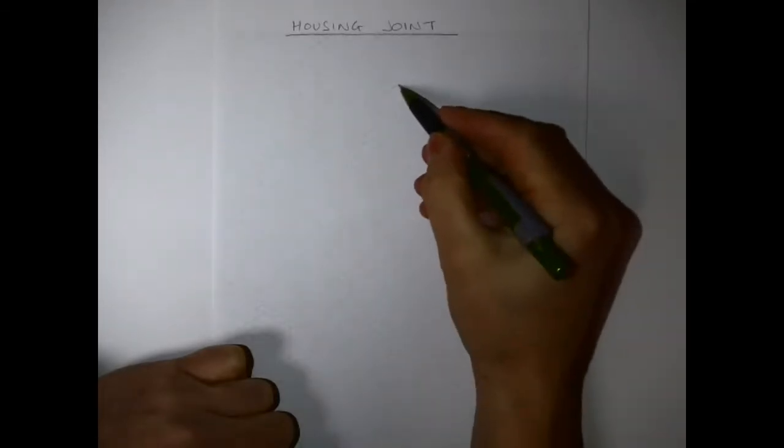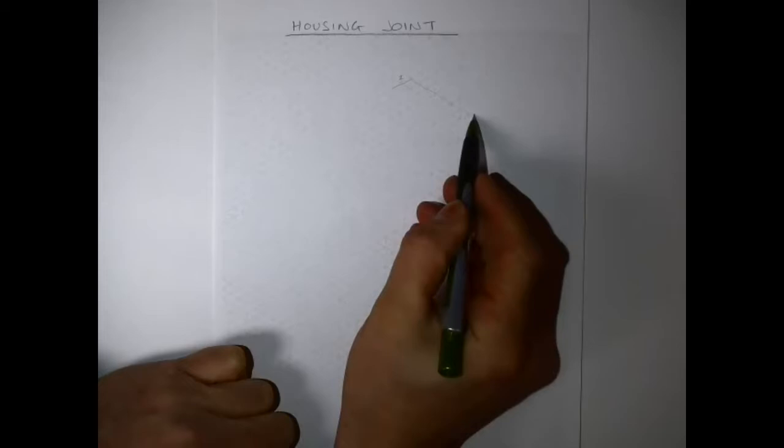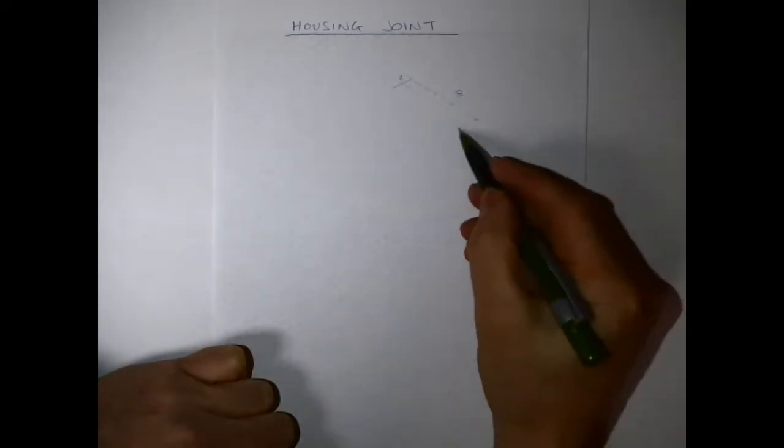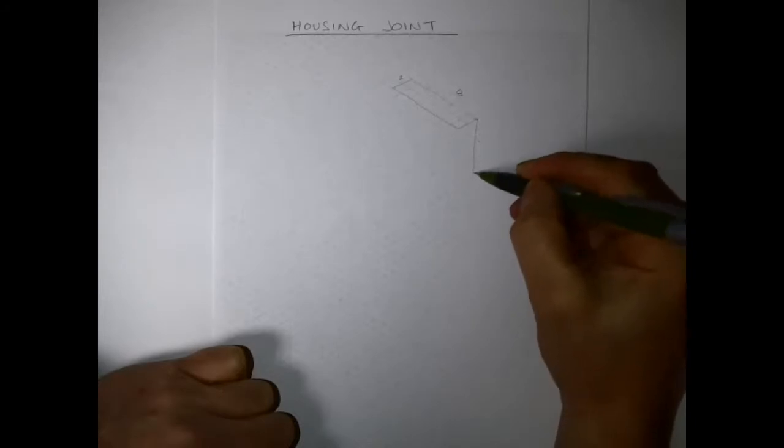I'm going to start by drawing two squares at 30 degrees left to right, and I'm going to measure eight squares along the other direction. Then I'm going to measure down five squares.